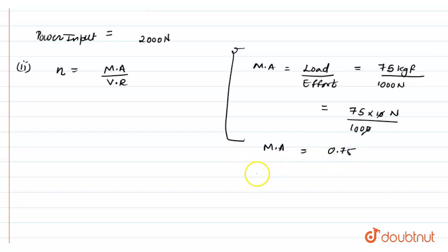Now, as velocity ratio is the number of pulleys and the number of pulleys here is 1, our velocity ratio is also equals to 1.